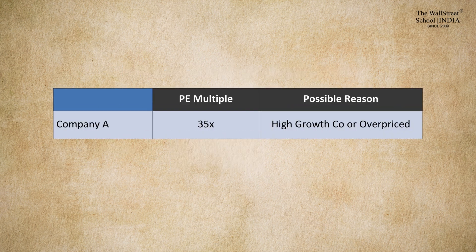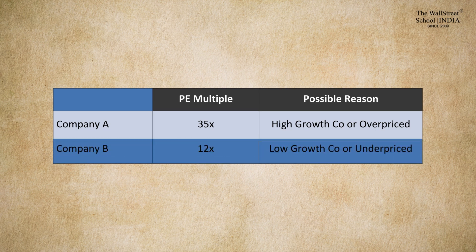A high P/E multiple means the investor is expecting higher growth from the company, compensated in the form of a higher price they are ready to pay. A low P/E multiple indicates the stock is either undervalued or investors are expecting lower growth from the company in the future.